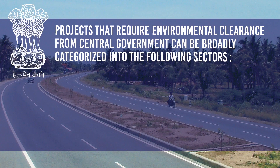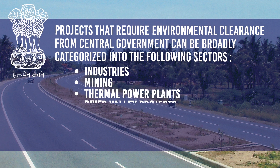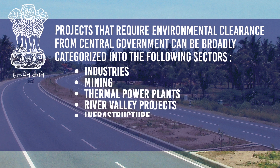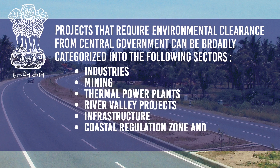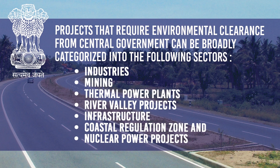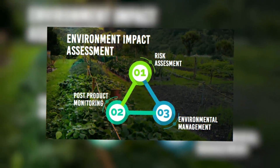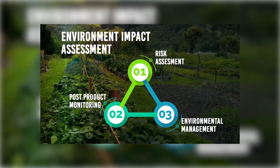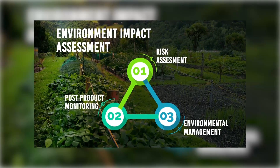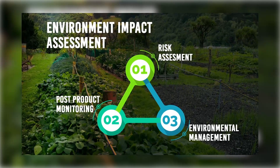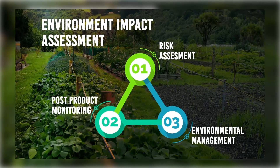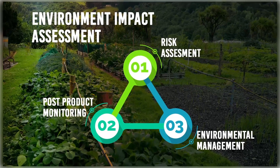Projects that require clearance from the central government can be broadly categorized into the following sectors: Industries, Mining, Thermal Power Plants, River Valley Projects, Infrastructure, Coastal Regulation Zone, and Nuclear Power Projects. The important aspects of EIA are Risk Assessment, Environmental Management, and Post-Project Monitoring.